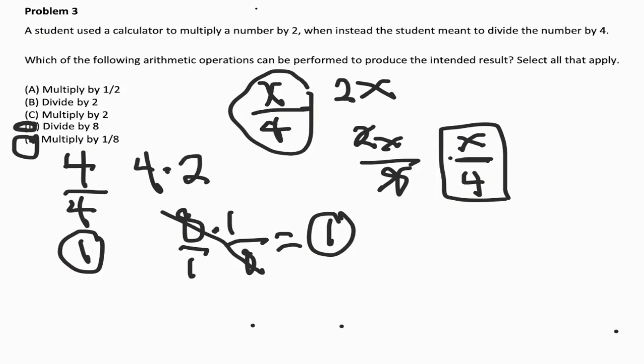And just to check, that's the same as multiplying by 1 eighth, right? So 2x times 1 over 8. Remember, 2x is really 2x over 1. So again, we're in the same position where 2 and 8 simplify. We divide them both by 2. We get x over 8 divided by 2 is 4. Yay, that's what we wanted.